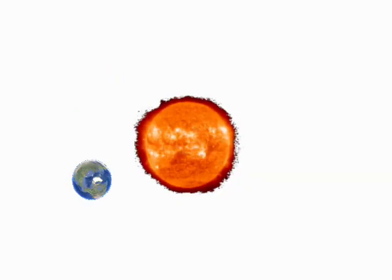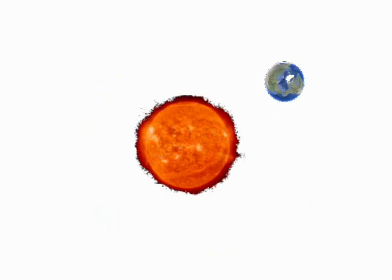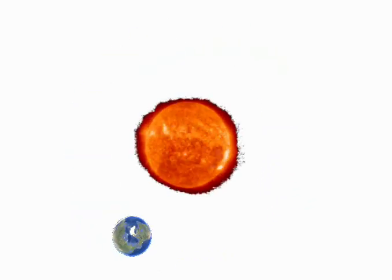However, with gravity gone you will actually have many other problems besides trying to stay on the ground. First of all, without gravity we wouldn't be pulled towards the Sun anymore. So by the same principle, the earth will no longer rotate around the Sun and will instead move in a straight line until the Sun is out of sight.